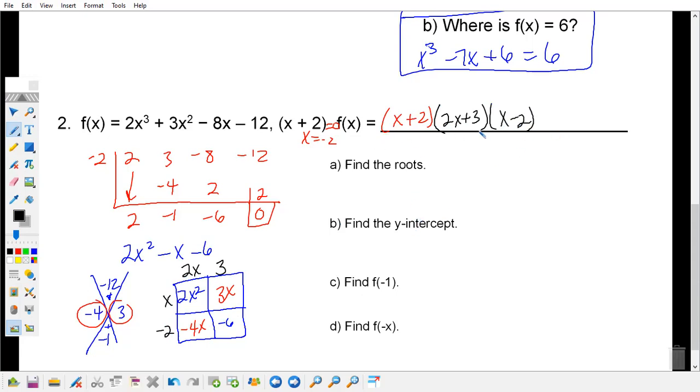Okay, so now my function f of x is fully factored. To find the roots, that means I'm taking each factor and setting it equal to 0. So we have x plus 2 equals 0. We have x minus 2 equals 0. And we have 2x plus 3 equals 0. Okay, when I set each one of them equal to 0, I end up with x equals negative 2, x equals positive 2. And we have x equals negative 3 halves.